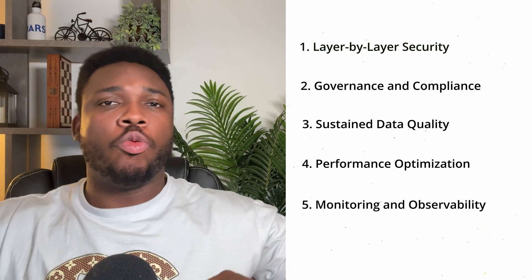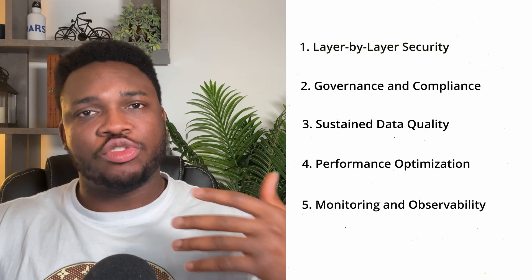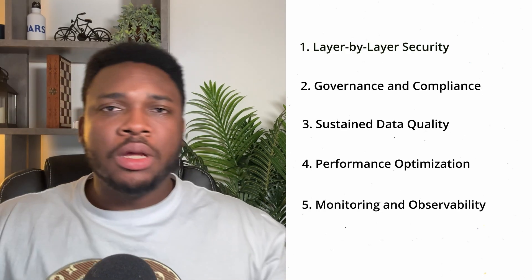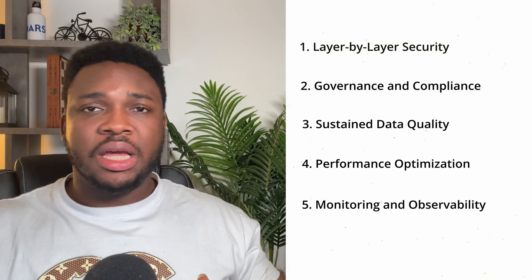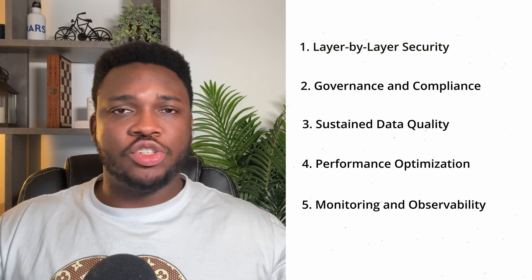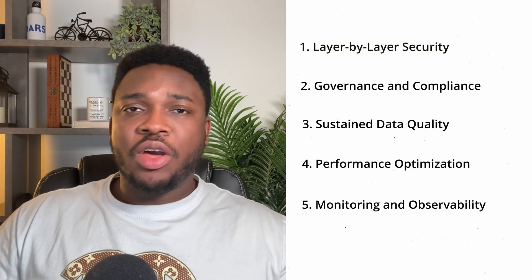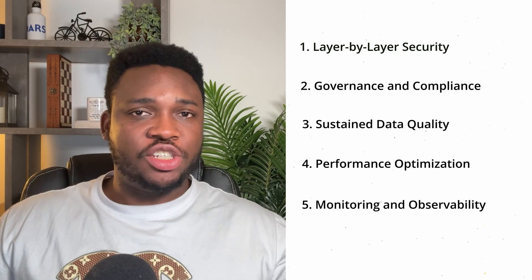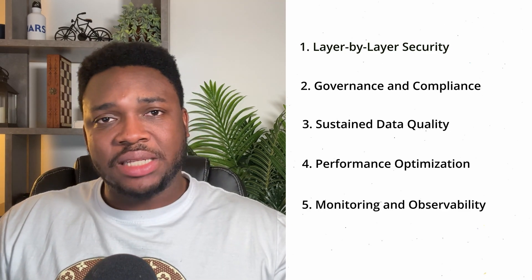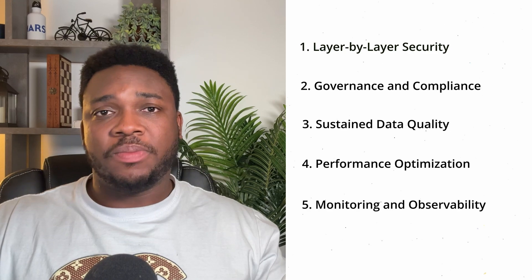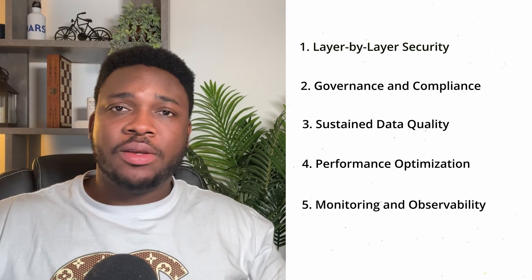The fifth best practice is monitoring and observability. Maintaining a robust medallion architecture means continuously tracking pipeline health. It's recommended to set up a dashboard to monitor load times, error rates, throughput, resource utilization, CPU, and memory. You can also integrate alerting tools into platforms your developers use regularly — like Slack or Teams — to notify your team if any job fails or if data freshness falls behind schedule. Regular log reviews can also help spot anomalies that could signal deeper issues like upstream data source problems or malicious access.